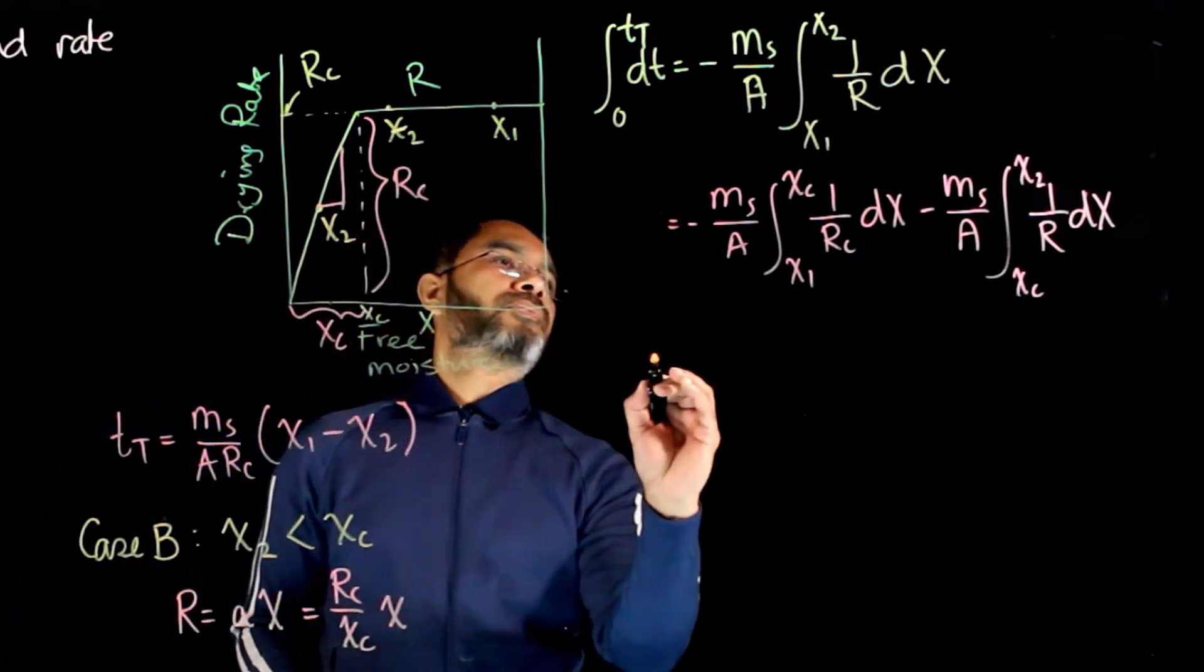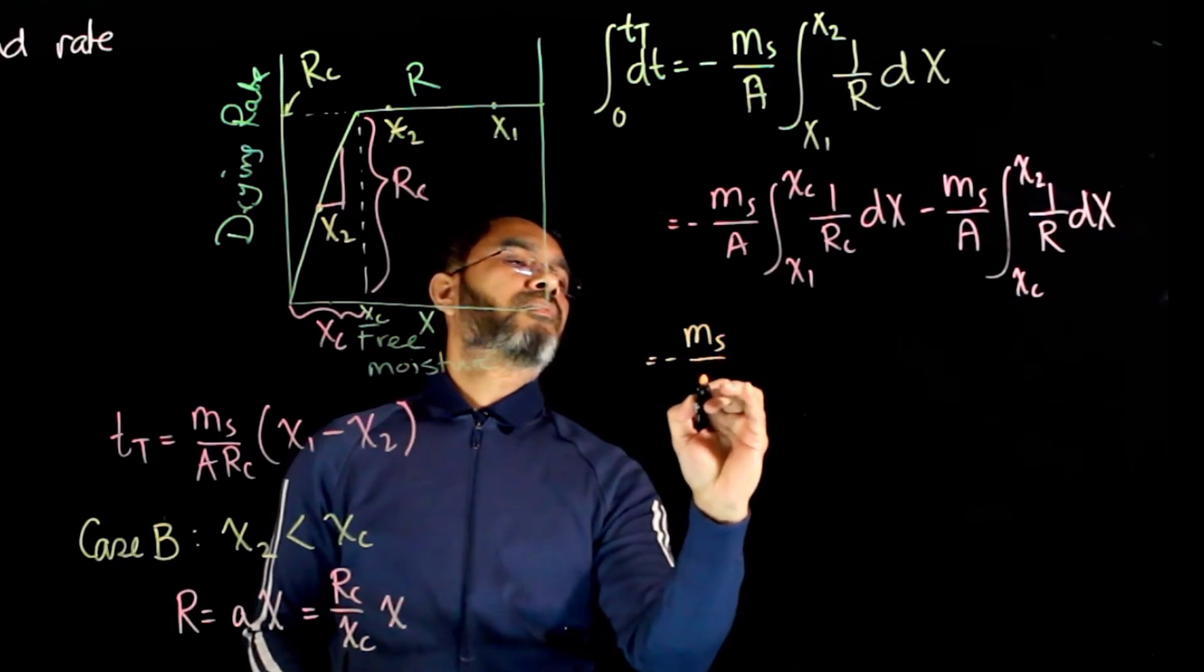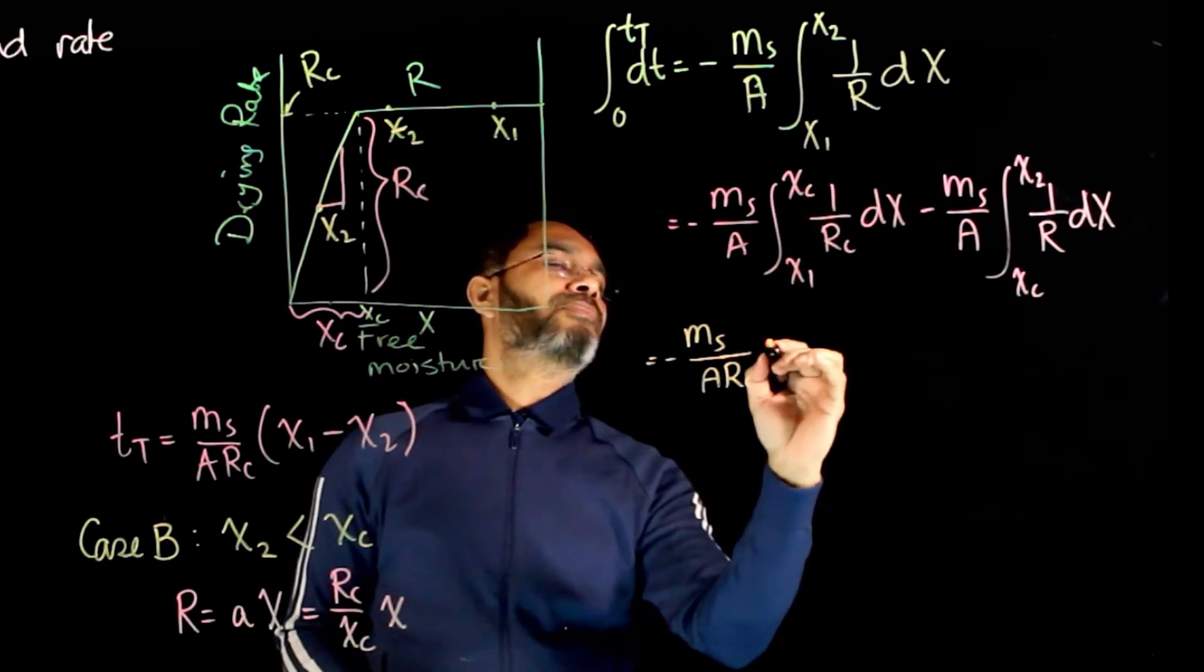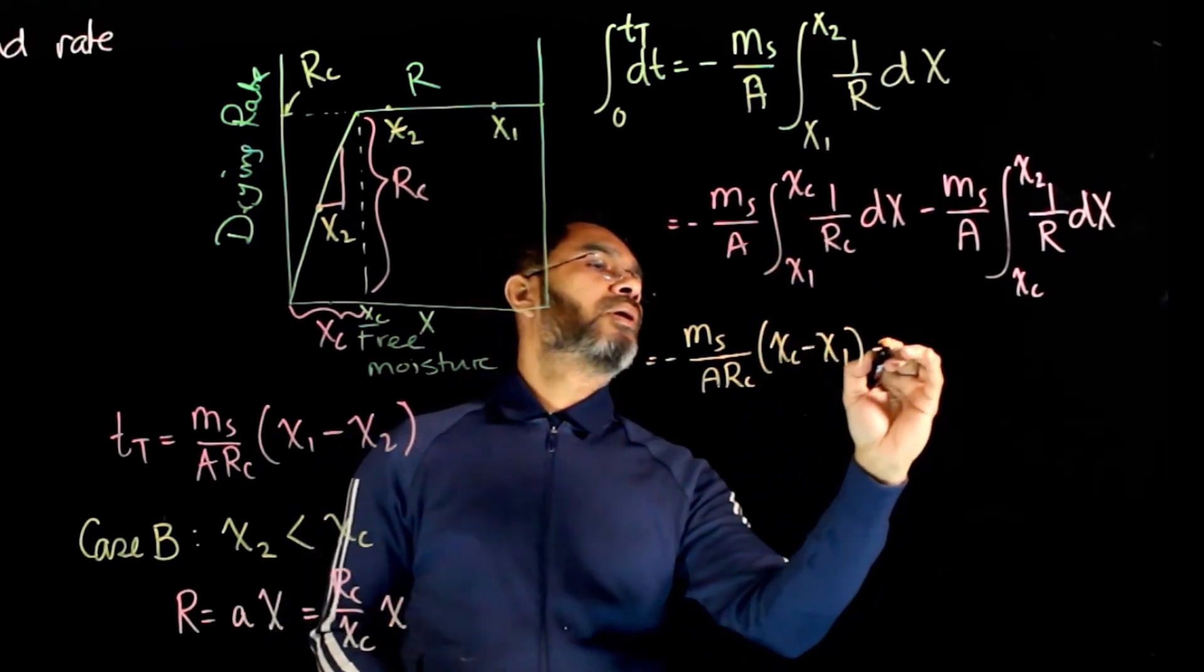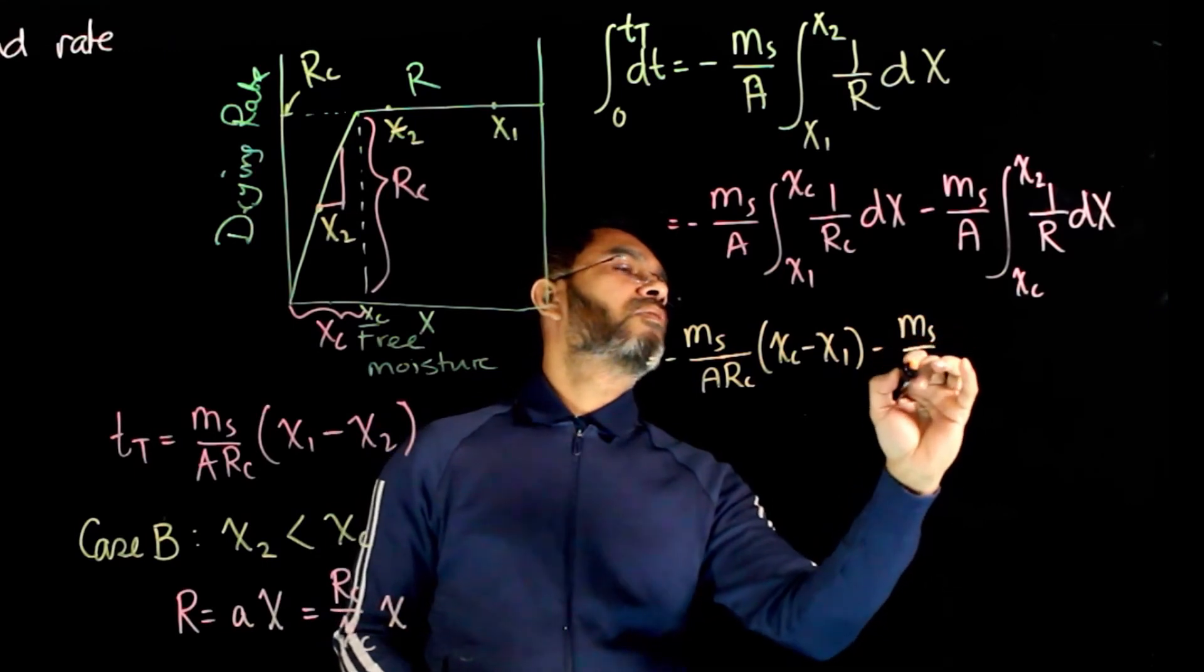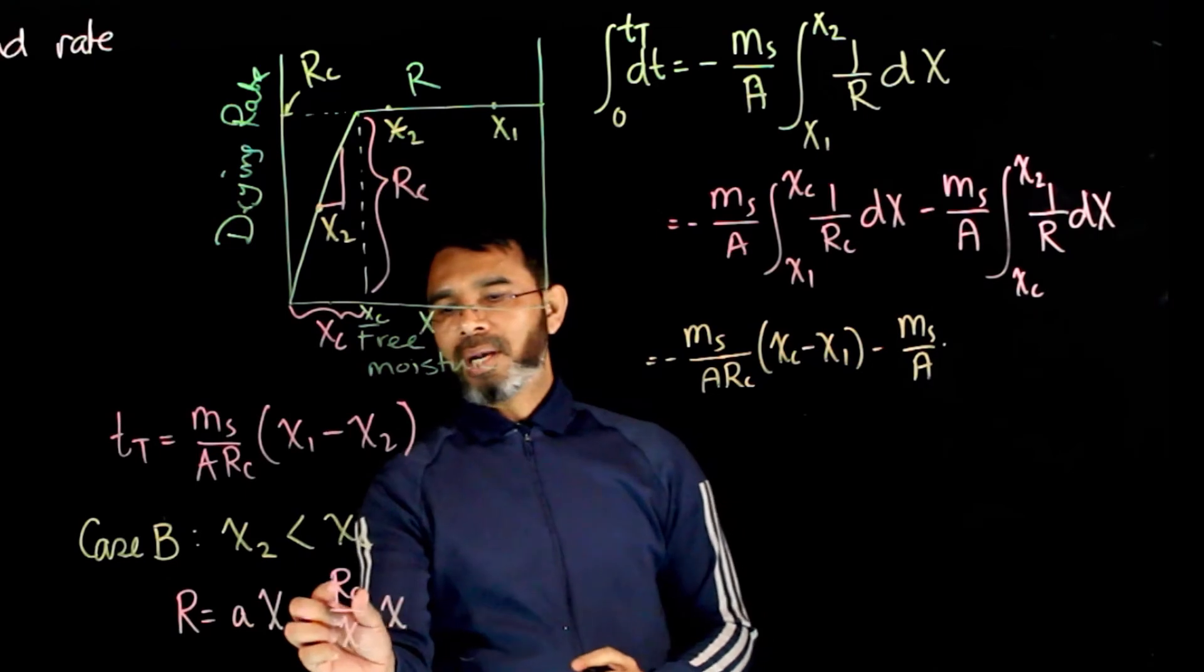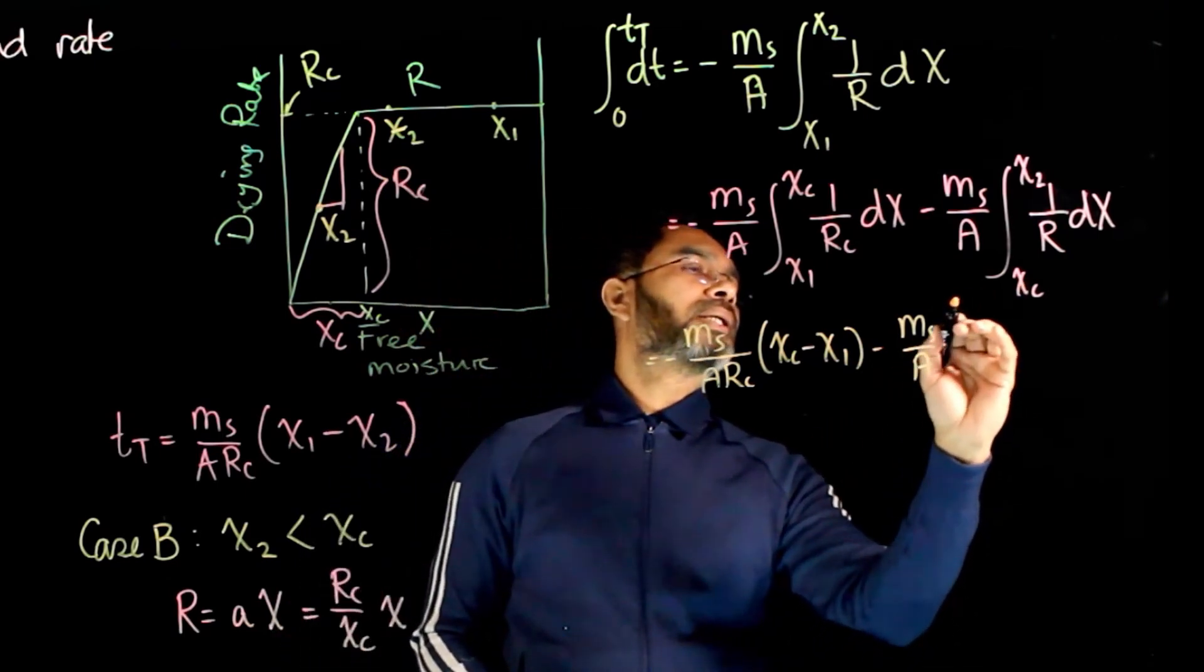So this leads to, since this is constant, it will be a rc and simply xc minus x1, minus ms over a, this is 1 over r, xc over rc 1 over x.